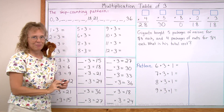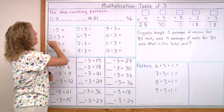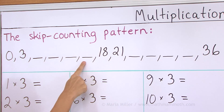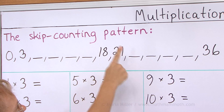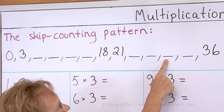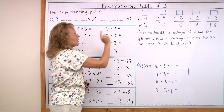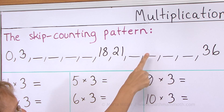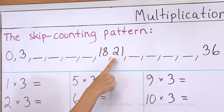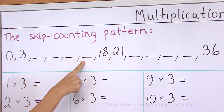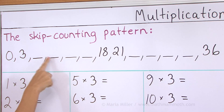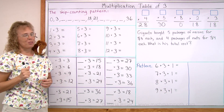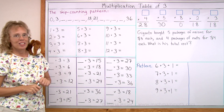Now we're going to do the whole list. Okay? You ready? Ready? Your turn. 0, 3... 18, 21... And backwards. 36... 3 and 0. Make sure you know that list by heart before you go on.